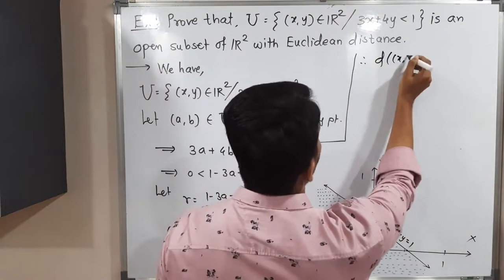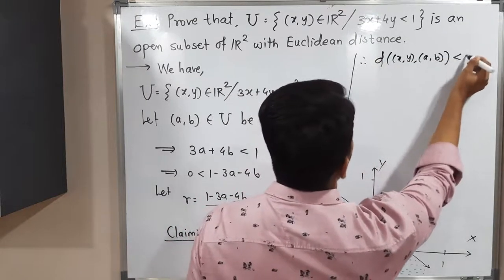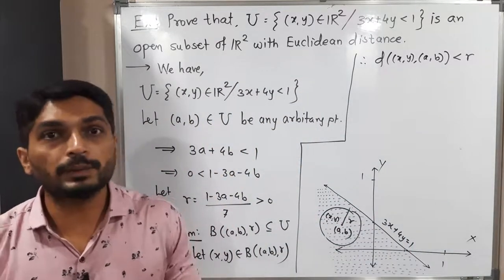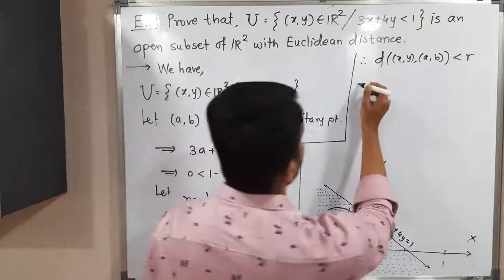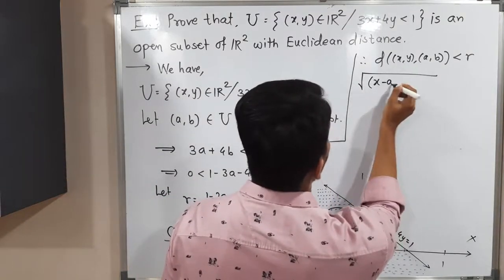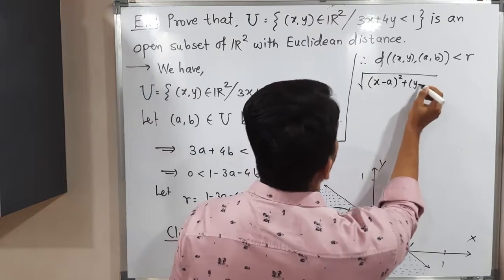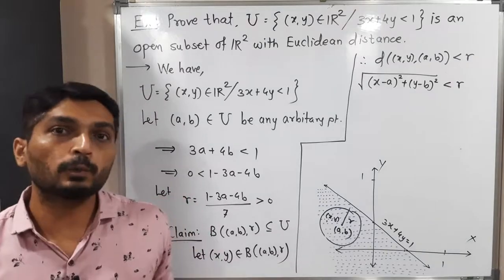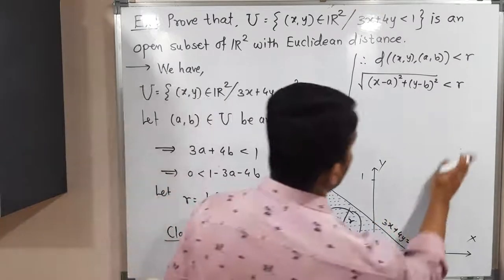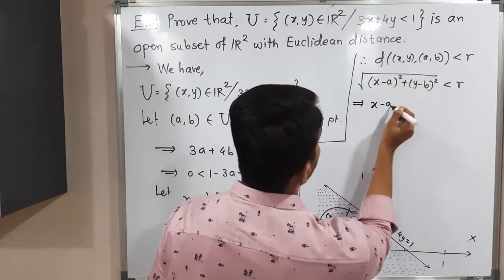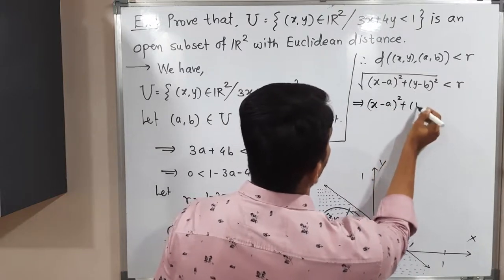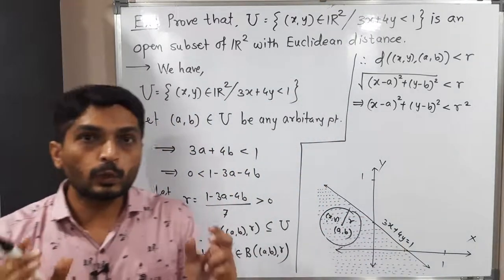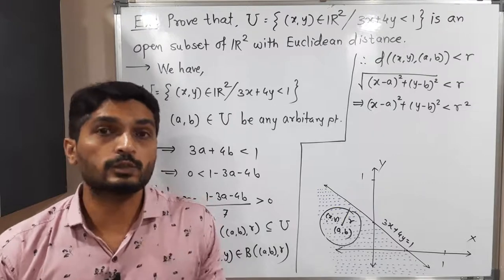Therefore, the Euclidean distance of (x, y) from (a, b) is less than r. The Euclidean distance is √((x−a)² + (y−b)²) < r. Taking the square of both sides to remove the square root gives: (x−a)² + (y−b)² < r². We are adding two non-negative terms whose sum is less than r².